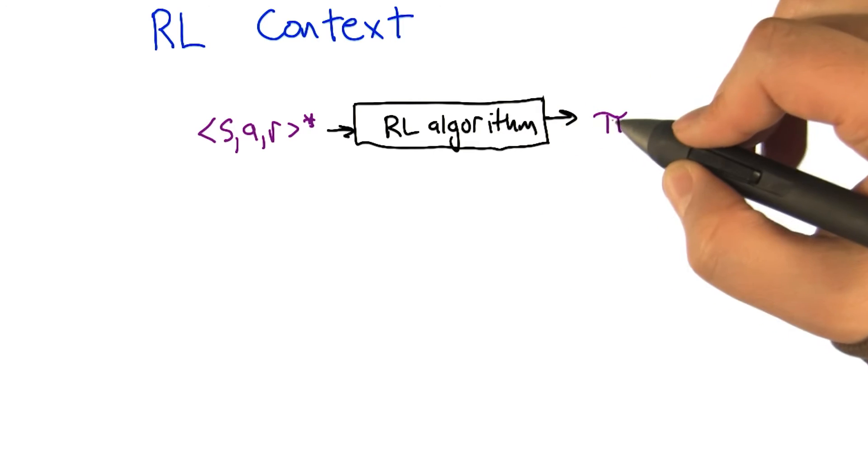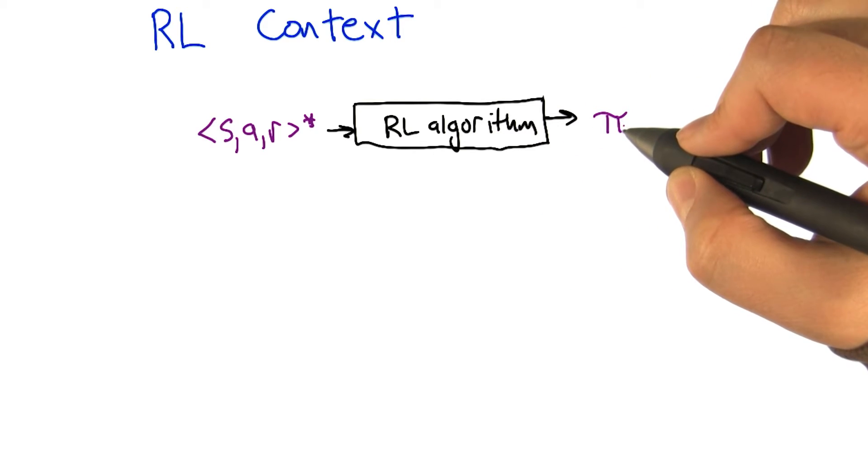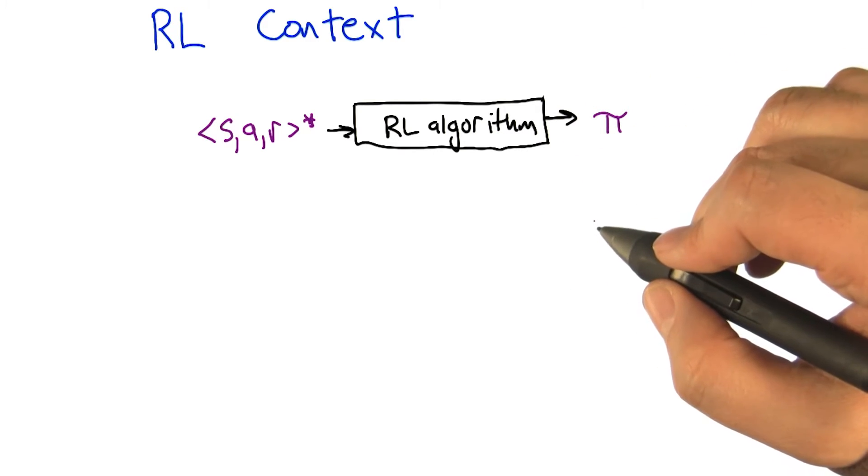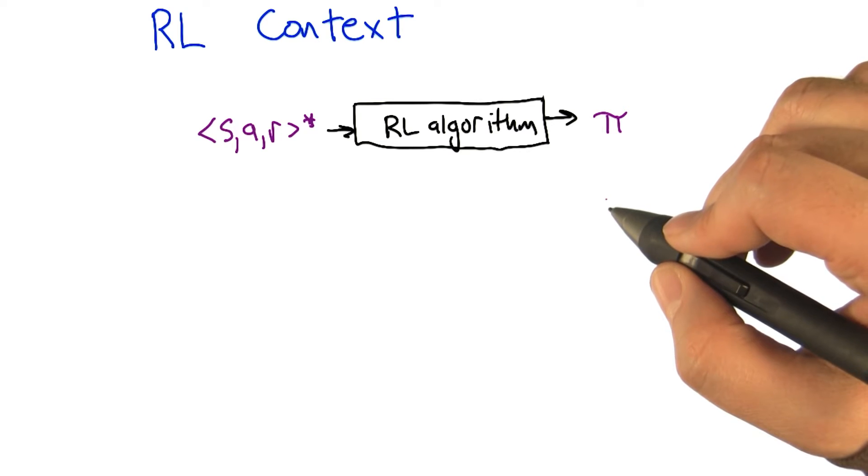That's what comes as input to a reinforcement learning algorithm. And what the reinforcement learning algorithm produces as output is a policy. Sure, that makes sense.